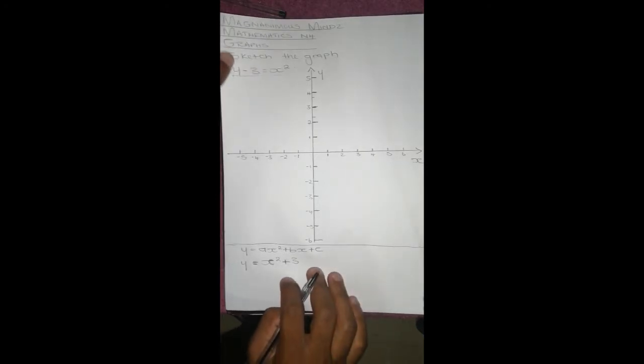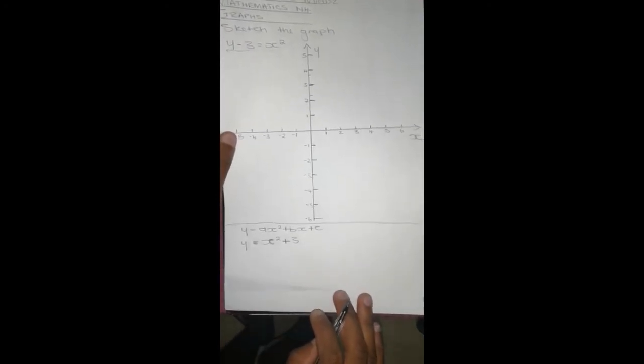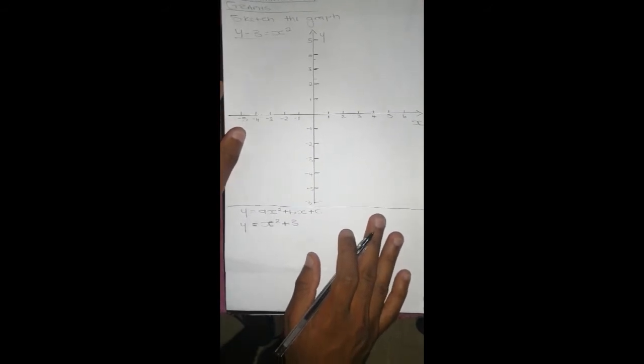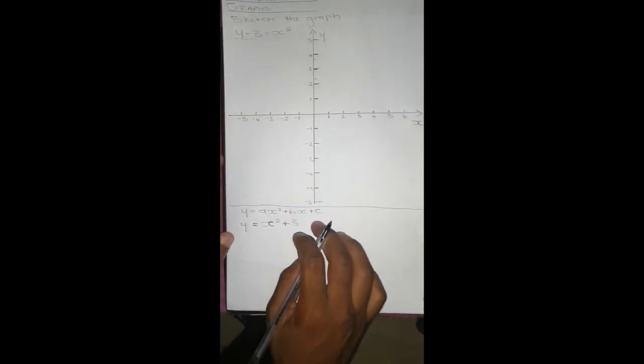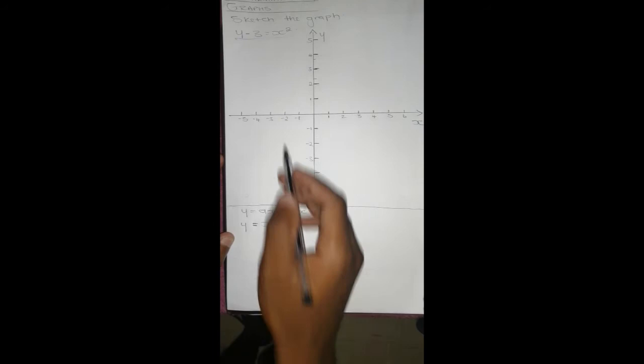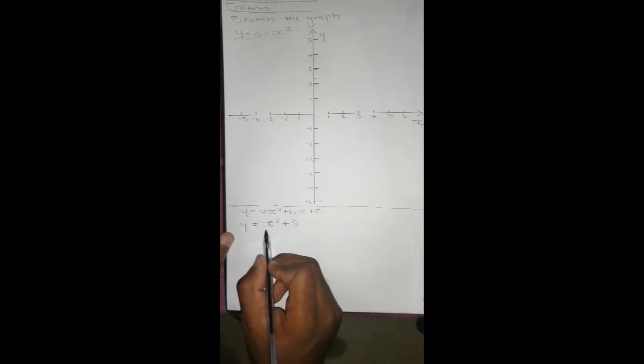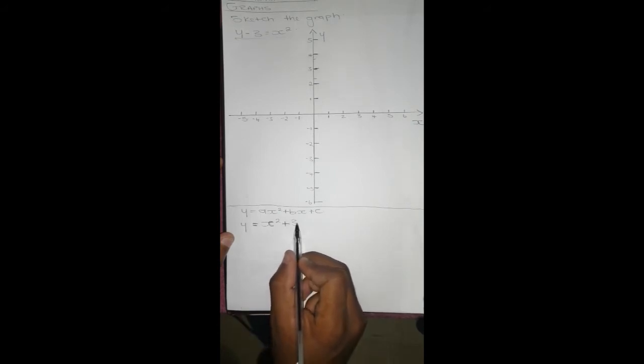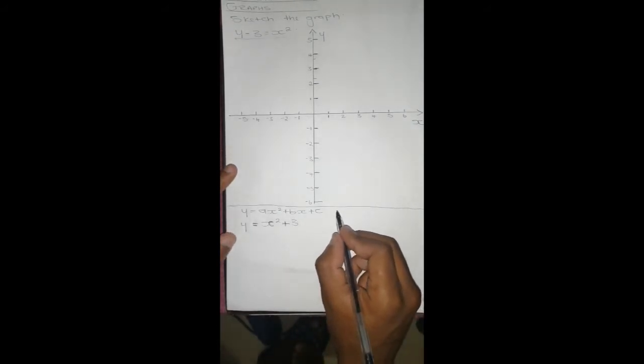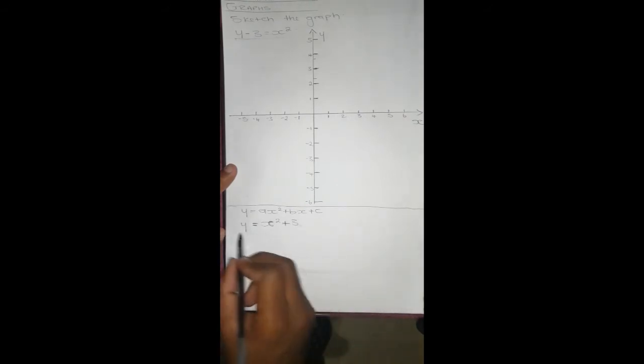Before sketching this graph, we know it's a parabola and our a is positive, so it's looking upwards. But then we do not know where it's touching the x-axis. We only know where it's touching the y-axis because c is the y-intercept.